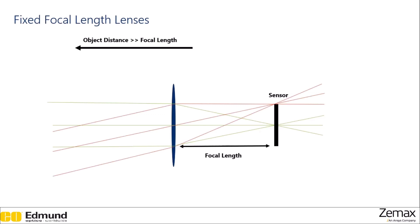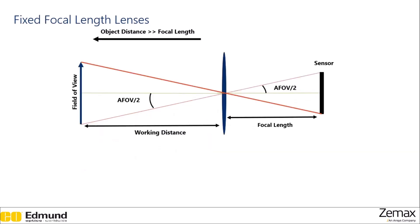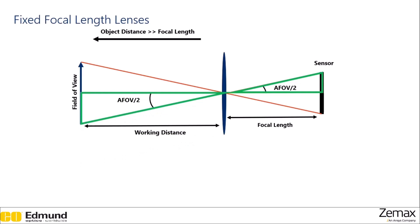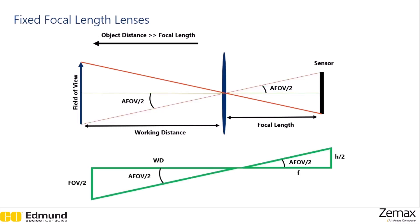If we take another set of rays that comes in parallel, but then is focused to clip the top of the sensor, looking at the angle between the ray passing through the center of the lens hitting the center of the sensor and the ray passing through the center of the lens hitting the top of the sensor gives us our half angular field of view. Here is the diagram of what we get by drawing all these rays. We can see we have our various parameters that can be taken to form right triangles. Note this image is not drawn to scale since we're still assuming that the object distance is much, much greater than the focal length. Pulling out these triangles, we can now form relationships between the angular field of view over two, the working distance, the field of view, the focal length, and the height of the sensor.